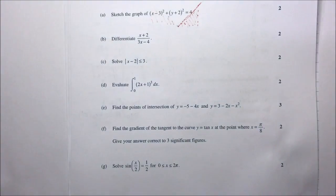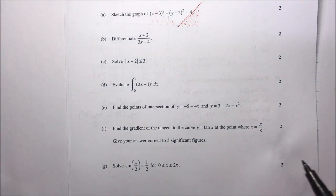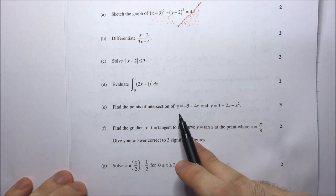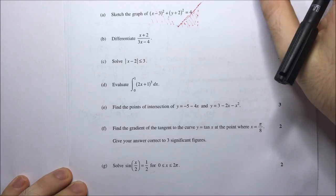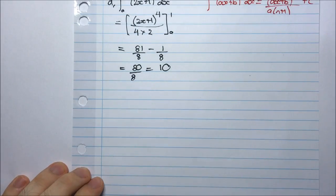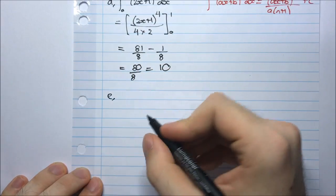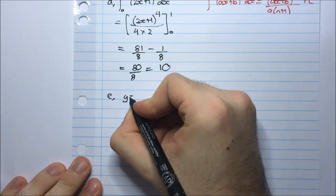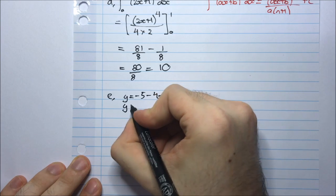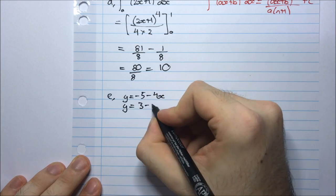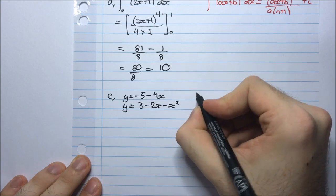The next one, part E. Find the points of intersection of y = -5 - 4x and y = 3 - 2x - x². So I have 2 lines and I want to find their intersections. Well I'm going to solve them simultaneously because that will give me the points of intersection.